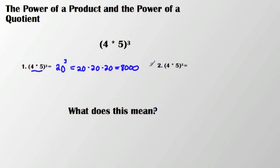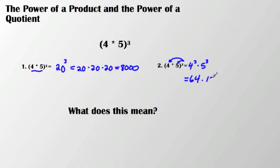Instead, what I could do is essentially distribute that exponent to each of my two values here. And I would get 4 to the 3rd times 5 to the 3rd, which would get me 64 times 125, which not so coincidentally also gets me 8,000. So there are two different ways to evaluate this problem.